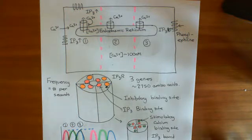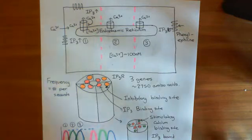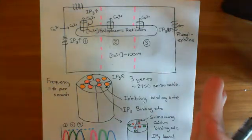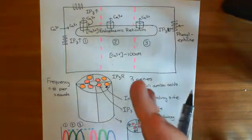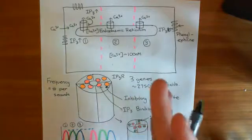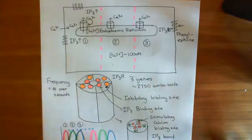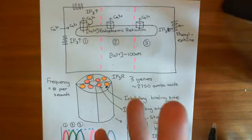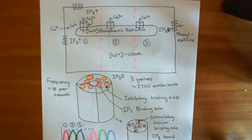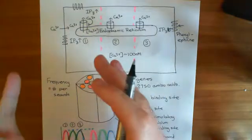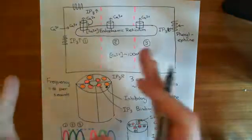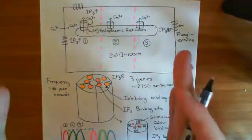Welcome to this fourth video on calcium waves. This is really the crux of calcium signaling — the grown-up version. When you were a first-year medical student, you learned the GQ pathway: that IP3 stimulates the IP3 receptor, causing calcium to go up in the cytoplasm. What I'm now telling you is that when you stimulate these GQ pathways, what you get are calcium waves that propagate through cells.